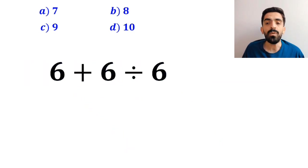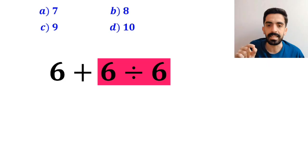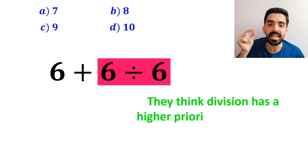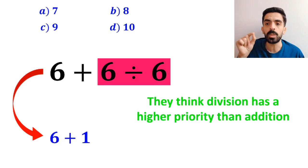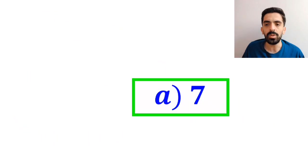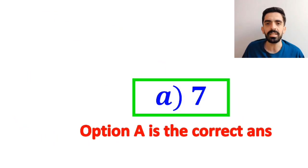Then they go for the division between the two 6s because they think division has a higher priority than addition. And they write this expression as 6 plus 1, which ultimately gives them the answer 7. And immediately, they conclude that option A is the correct answer to this question.